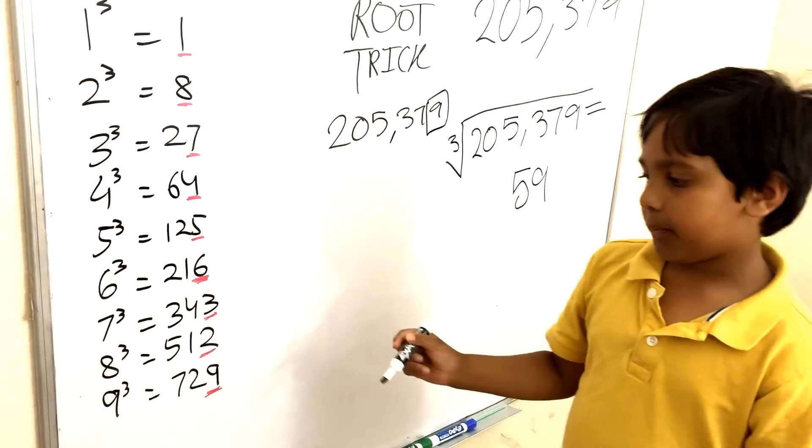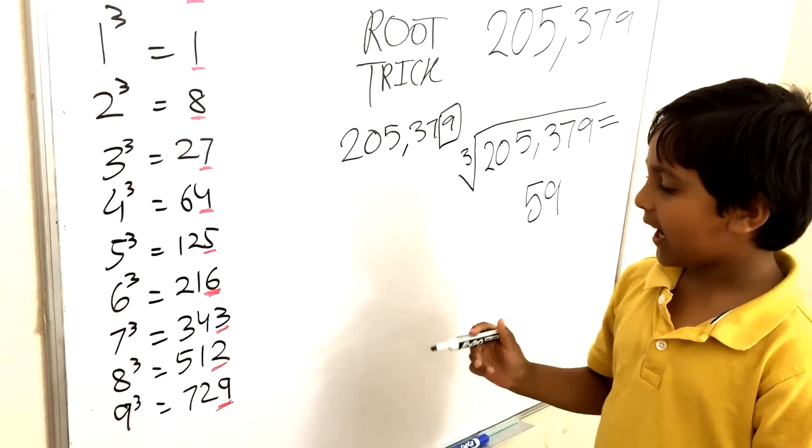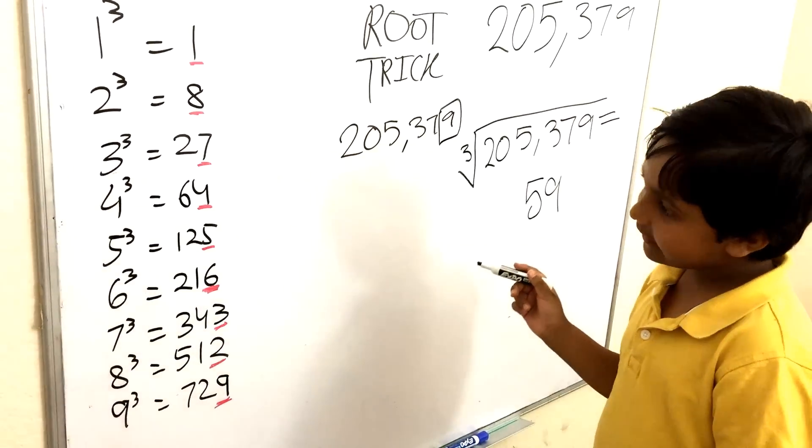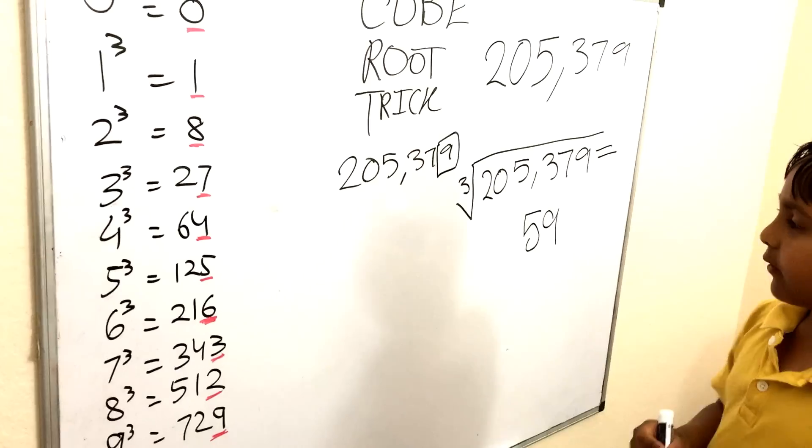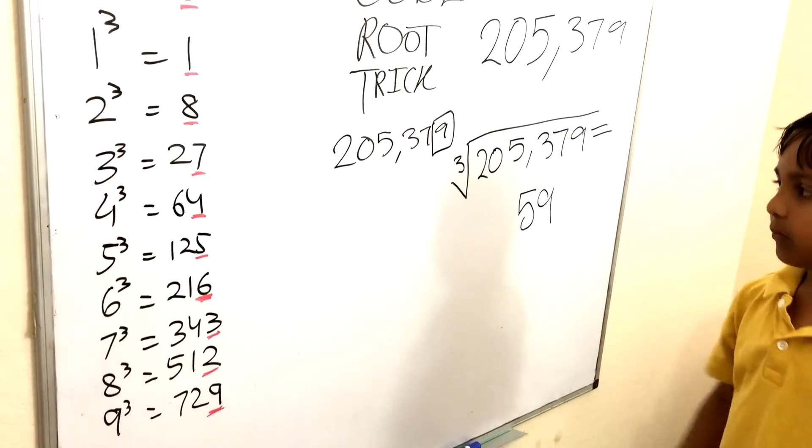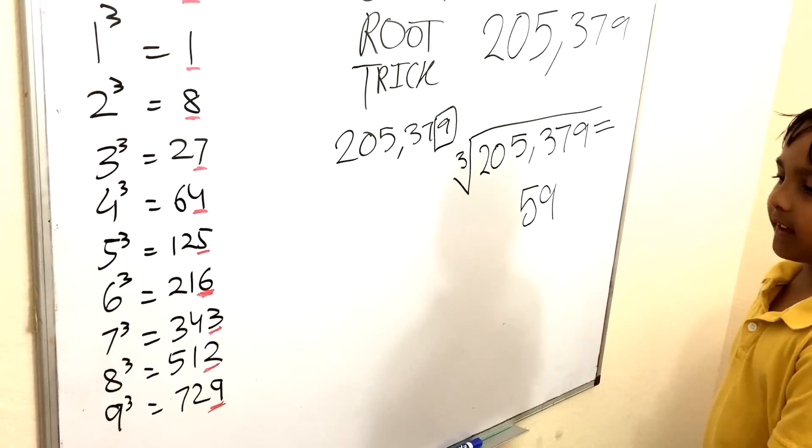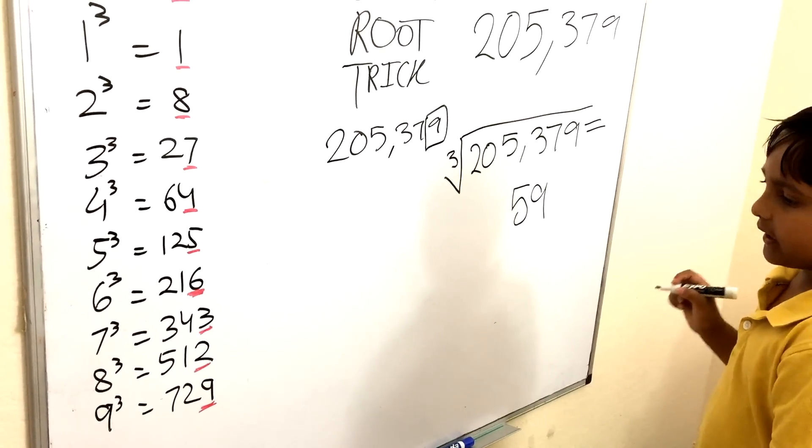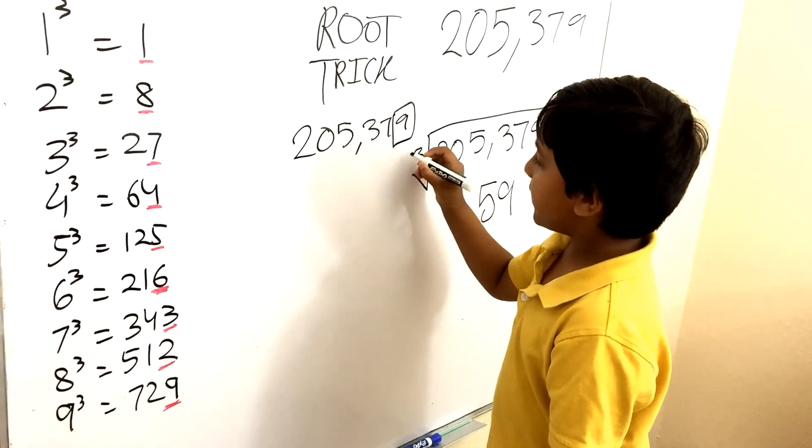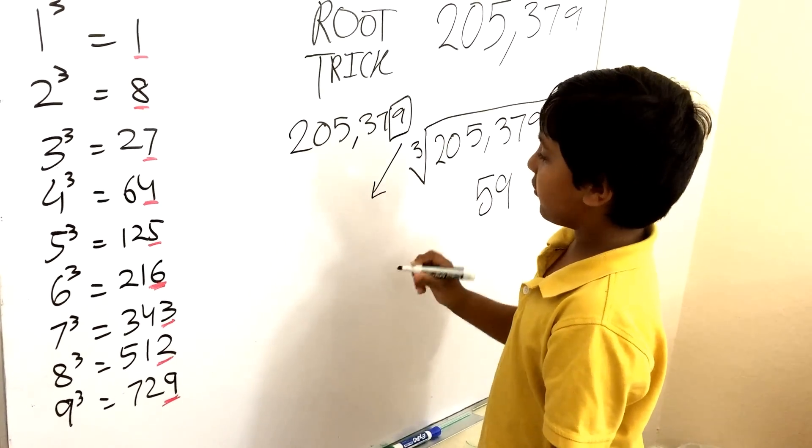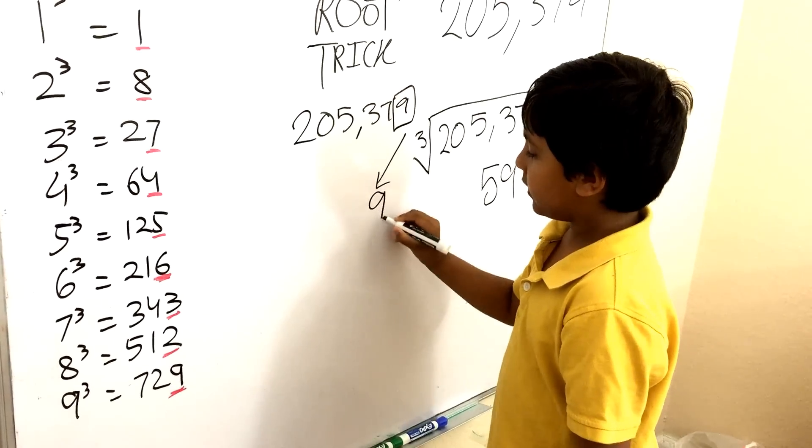And see which cube has a 9 in the last digit? You'll only be able to find 1 and it's 9 cubed. It's 729 and it ends with a 9. So that means 9 is supposed to be in the units place.